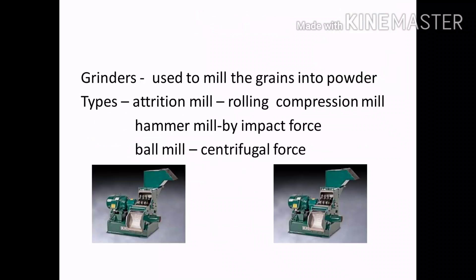If you want to use grinders, you can use them to mill grains into powder. Three types of grinders are: attrition, hammer, and ball. For example, rolling compression is used in the hammer type, and the ball type uses centrifugal force.